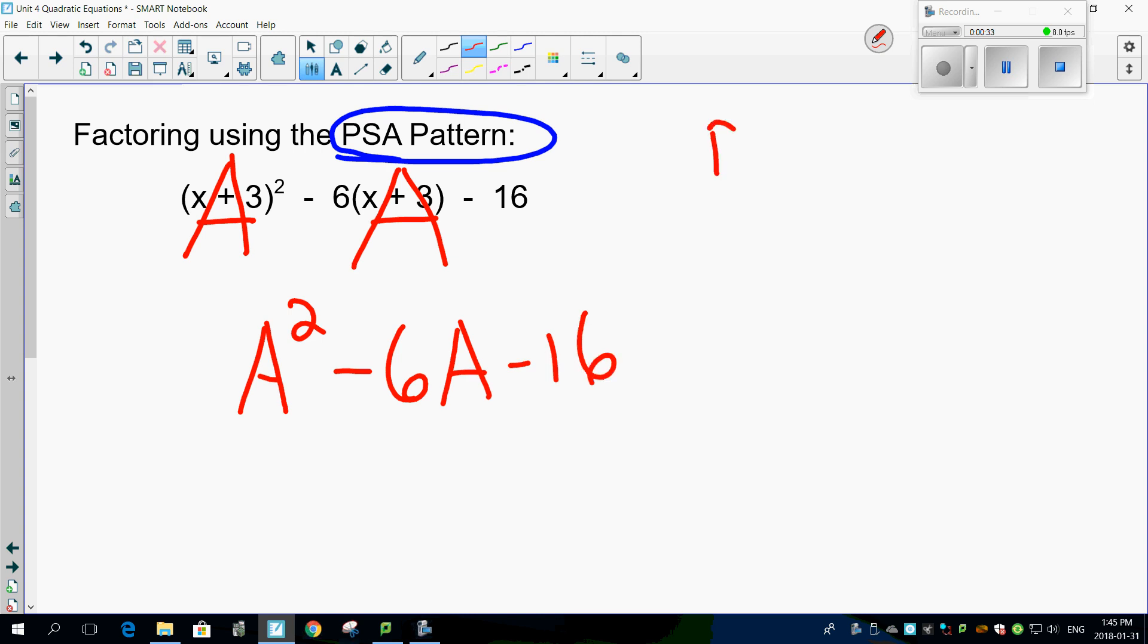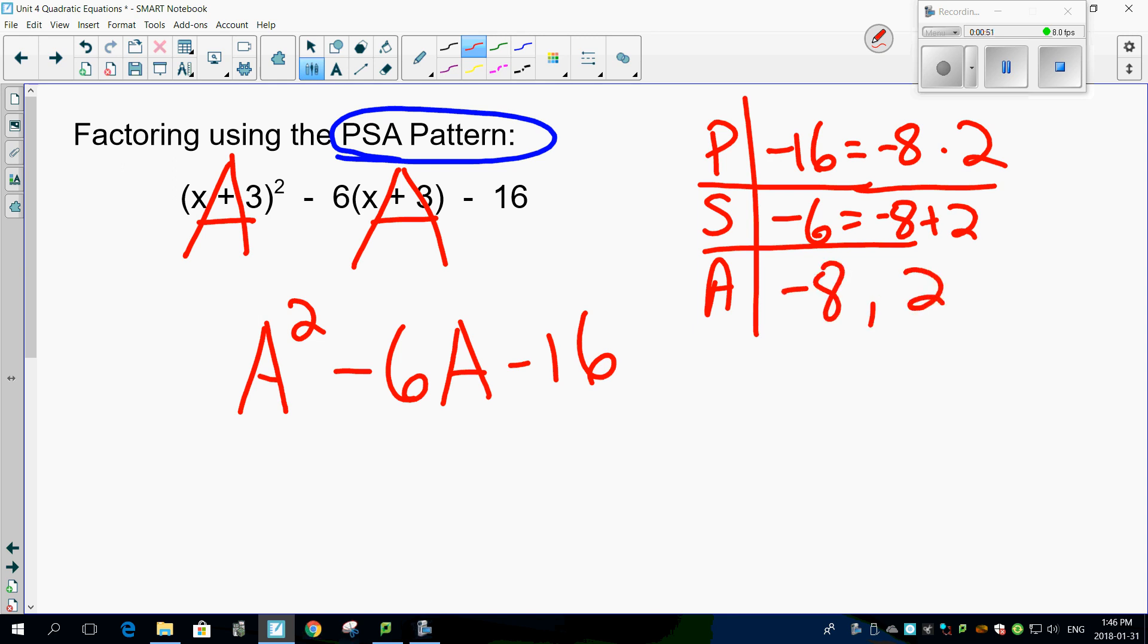If you say it, let's see what we got. Okay. Product minus 16. Sum minus 6. That's minus 8 times 2, right? Okay, gives you minus 16, minus 8 plus 2. Answer minus 8 and 2.